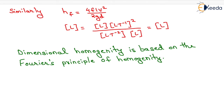Similarly, hf = 4flv² / (2gd). The dimension of hf is L, the dimension of l is L, the dimension of v is LT⁻¹ (squared because of v²), the dimension of g is LT⁻², and the dimension of d is L. After solving, the dimension reduces to L. So the left hand side is equal to the right hand side.